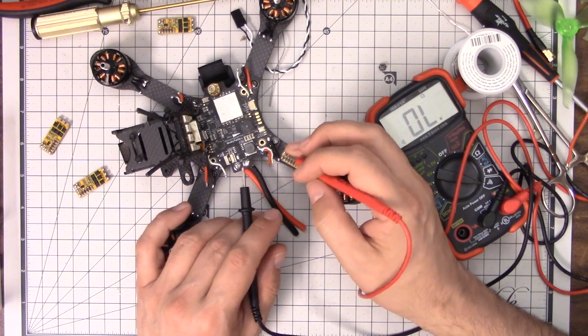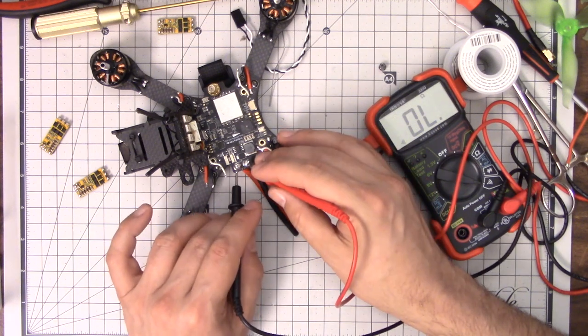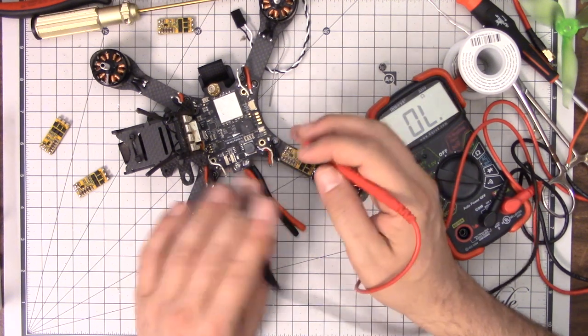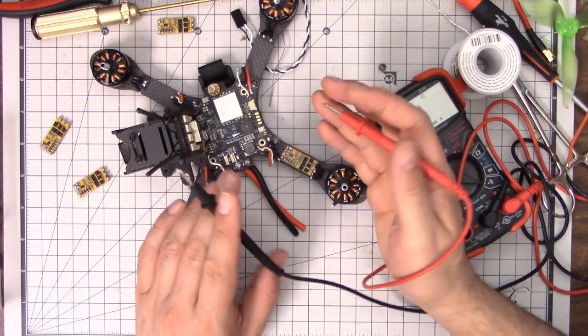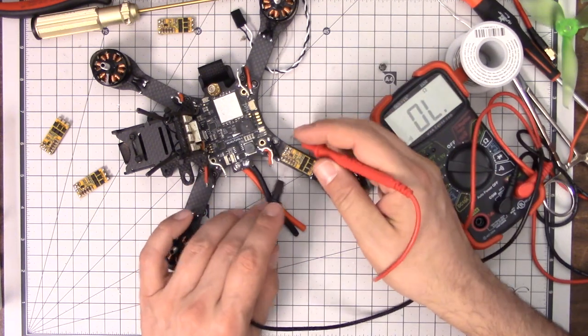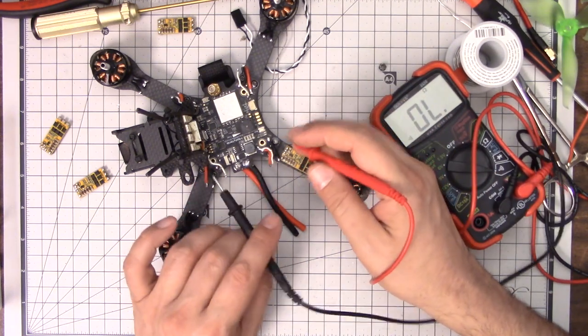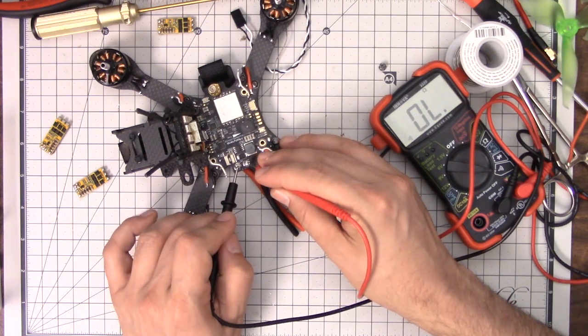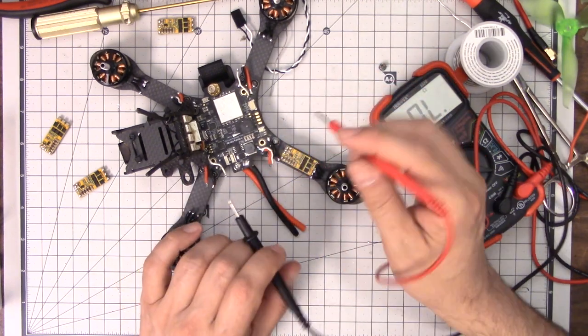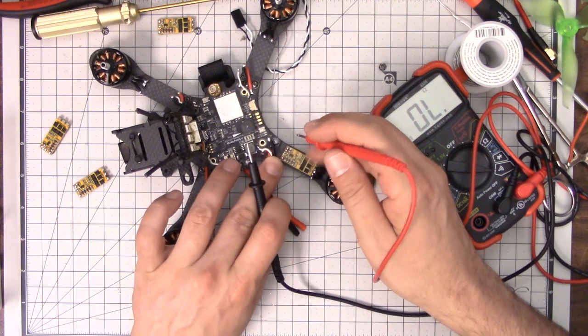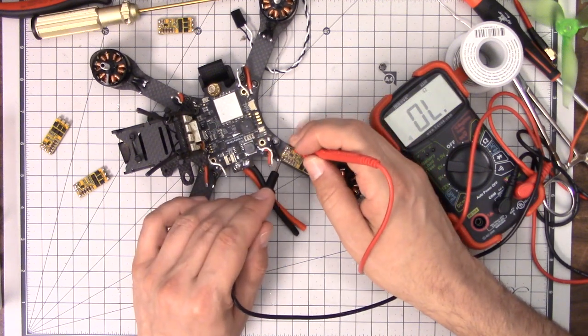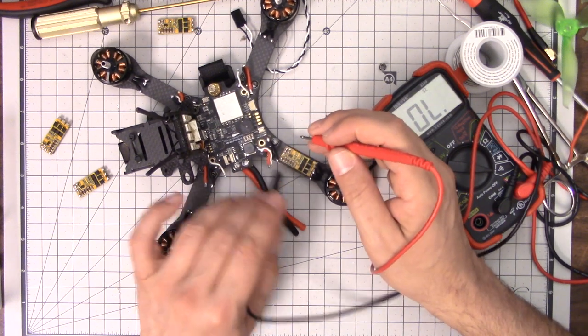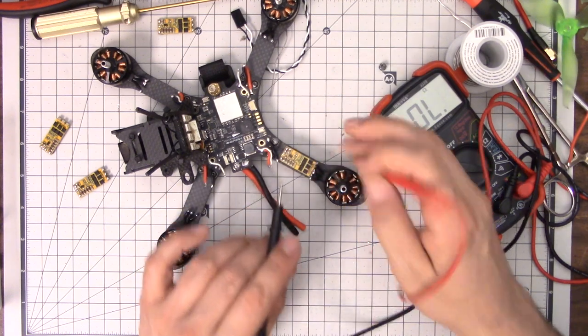So you just got to start desoldering the ESCs one at a time until it goes away. And then you know that was the ESC that had the problem. At that point, you could then test the ESC itself looking for continuity between the positive and negative pads to confirm that the ESC is the one with the short and that it's the damaged one.